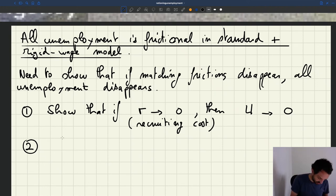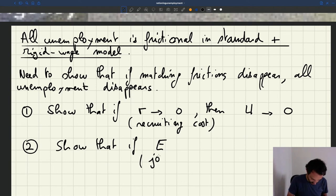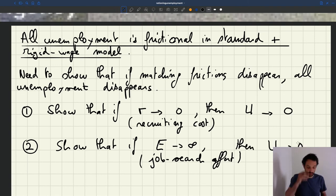So we can show another way to show that if E, where E is a new parameter that I haven't introduced yet, which would be the job search effort, if E goes to infinity, then U goes to zero. These are two ways to show what happened without matching frictions.